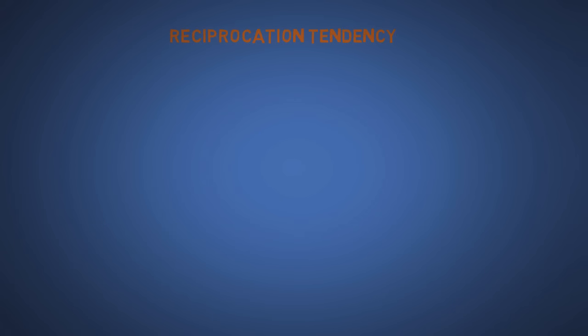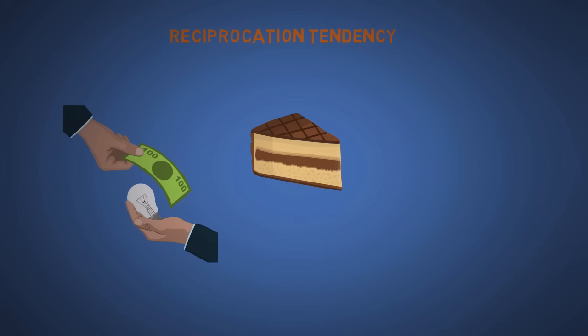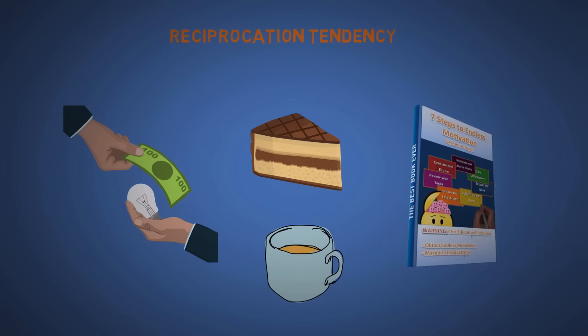The ninth is reciprocation tendency, which is related to the seventh. We tend to want to return the favor when someone gives us something or helps us out. This is why some supermarkets offer free samples, or why car salesmen might offer free coffee. But it is not why my ebook is free. I'm just nice.